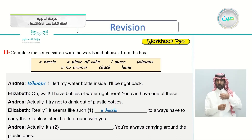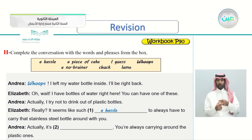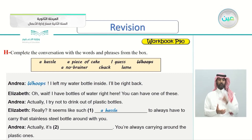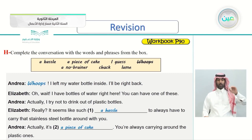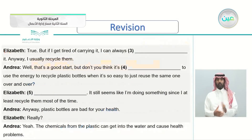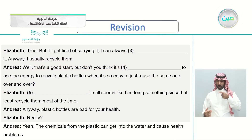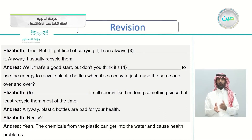So what is answer number two? That's correct — 'a piece of cake.' Andrea says: 'Actually, it's a piece of cake — you're always carrying around the plastic ones.' Continuing: Elizabeth says: 'True, but if I get tired of carrying it I can always... it anyway, I usually recycle them.'